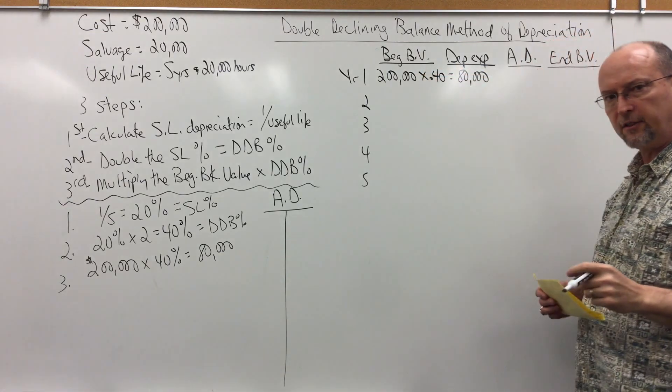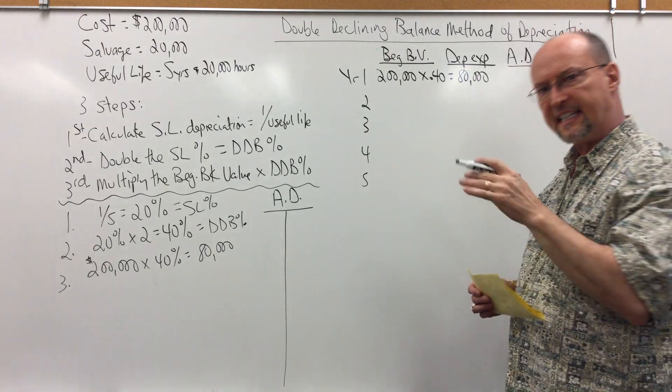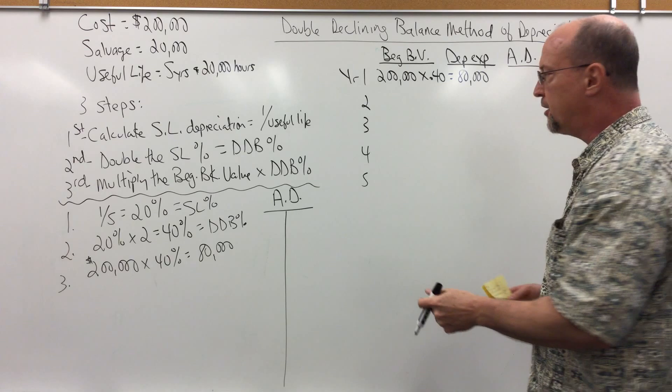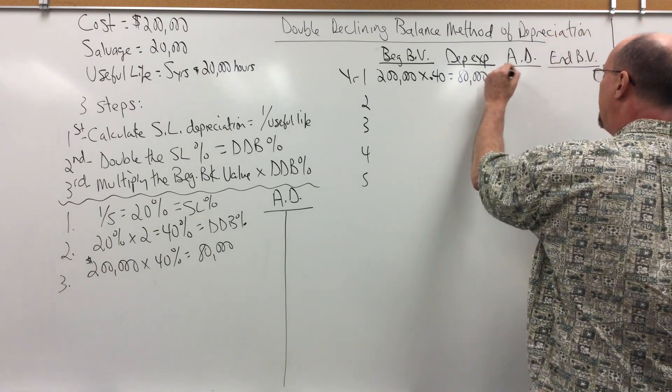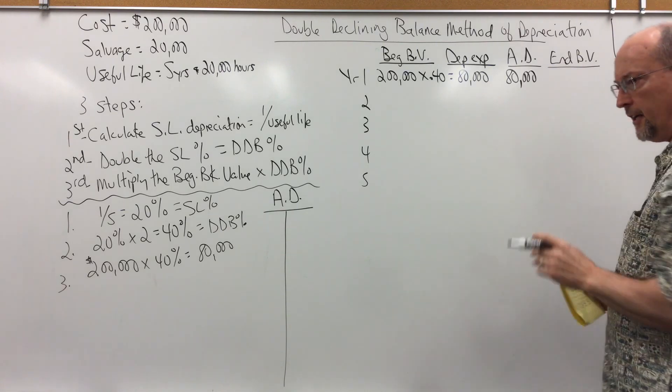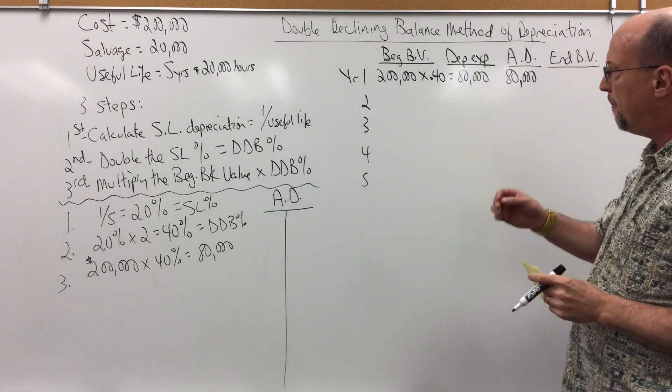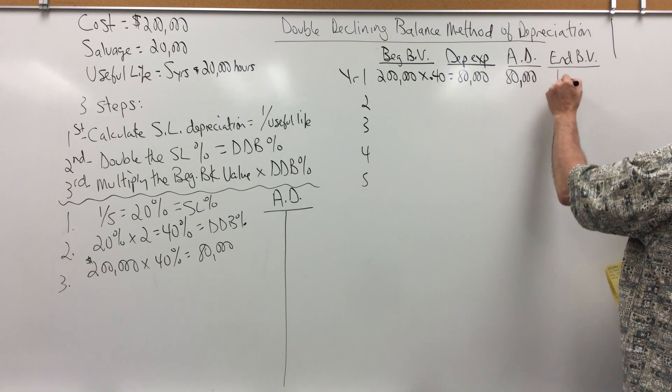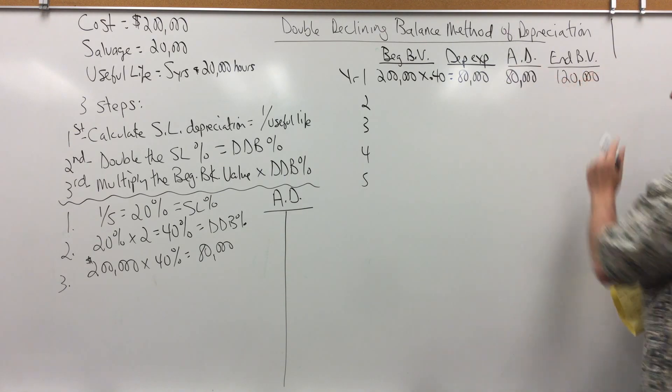My adjusting journal entry to record depreciation is debit depreciation expense, credit accumulated depreciation. So, accumulated will be $80,000. And then remember, ending book value is cost minus accumulated depreciation, which at the end of the year, December 31st, will be $120,000.